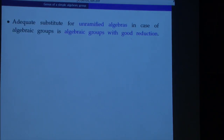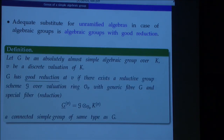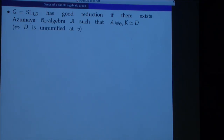Let me briefly explain how we generalize the analysis of ramification to algebraic groups. An adequate substitute for the notion of a ramified division algebra is the notion of an algebraic group with good reduction. Formally: we have an absolutely almost simple algebraic group defined over a field k and a discrete valuation of k. We say G has good reduction if there is a reductive group scheme over the valuation ring whose generic fiber is G and whose special fiber is a connected simple algebraic group of the same type as G. In particular, an SL_1(D) group has good reduction if and only if the division algebra D is unramified — coming from an Azumaya algebra over the valuation ring.